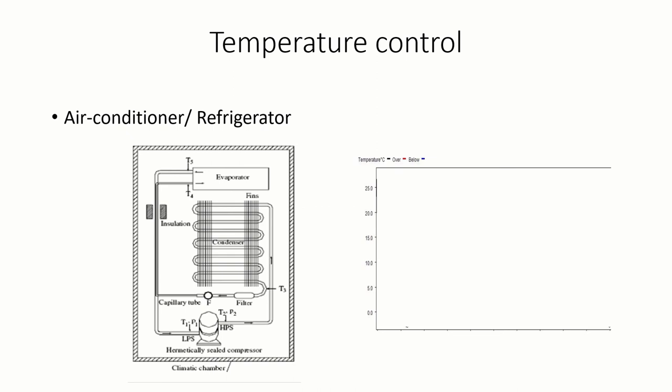Another example is a refrigerator or air conditioner. The figure shows the schematic of a refrigerator — the same applies to an AC. At the back of a refrigerator you find the condenser, and at the bottom back you find the compressor. The basic difference between refrigeration and air conditioning is the type of refrigerant used. When you turn on the refrigerator, the compressor starts and allows the refrigerant to flow inside the compartment, taking away heat from inside.